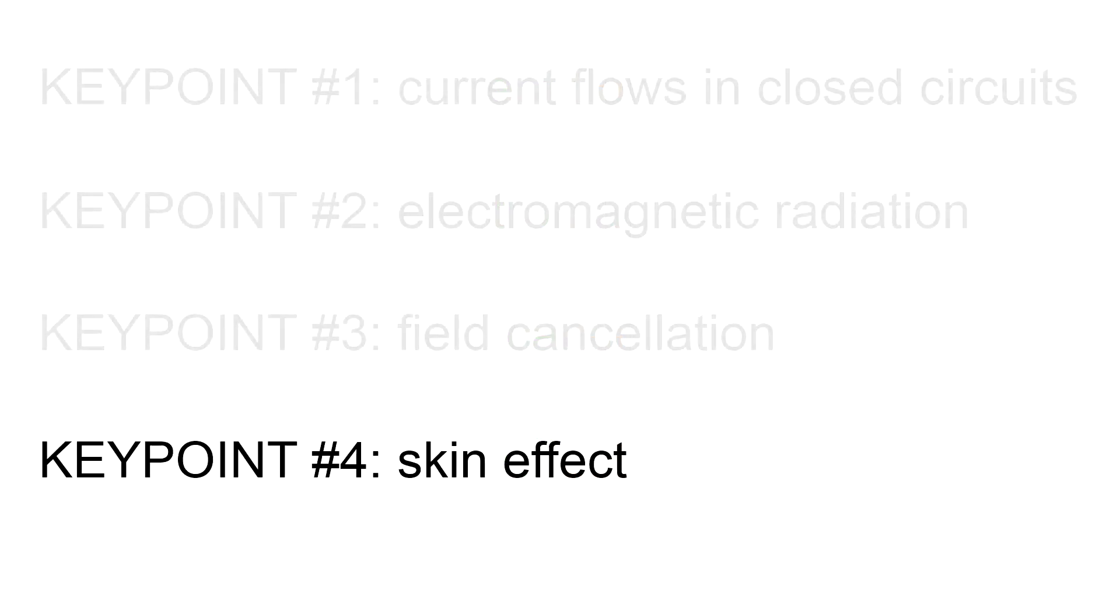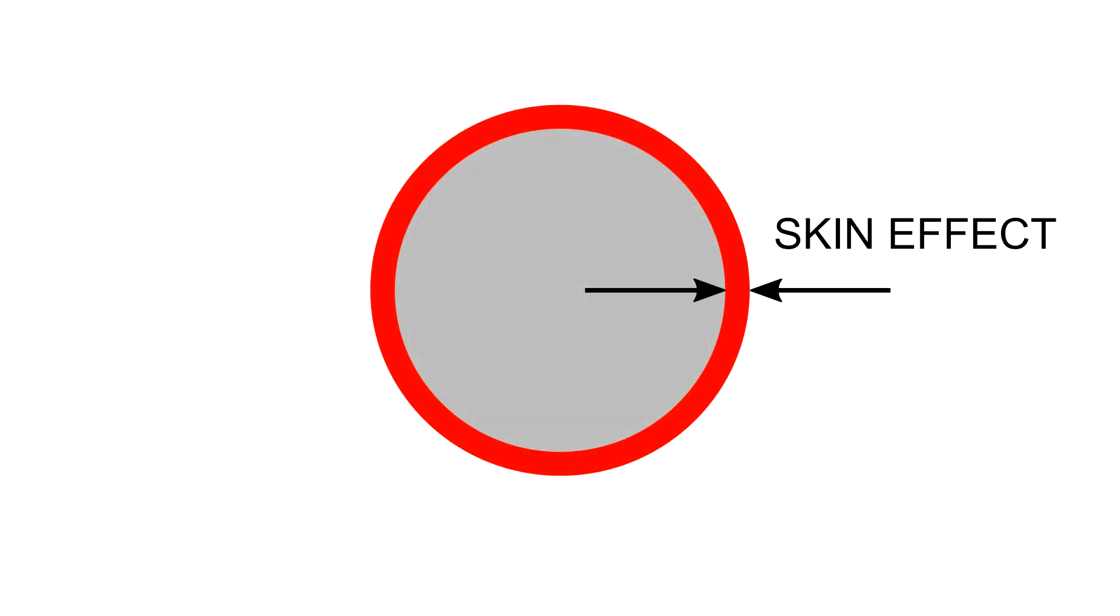Key point number four, skin effect. The fourth key point is skin effect. Due to this effect, AC current uses only the external layer of the conductor. The higher is the frequency, the thinner is the used layer. Anything below that layer is insignificant for the current.